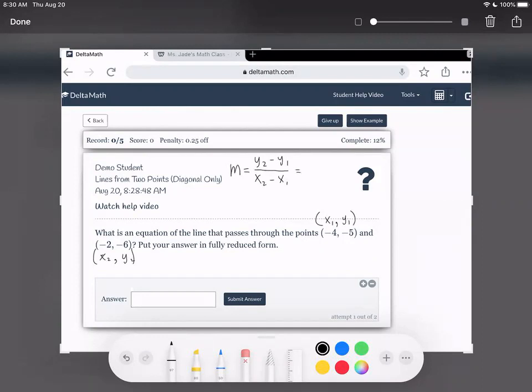Okay, so y2, we have them being negative 6, minus y1 is negative 5, all divided by our x2 is negative 2, minus our x1 is negative 4. So many negatives.